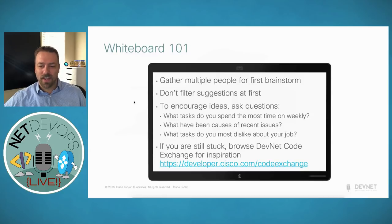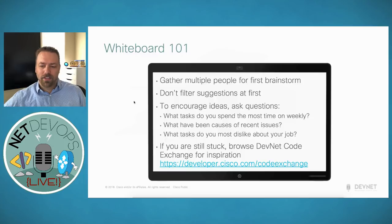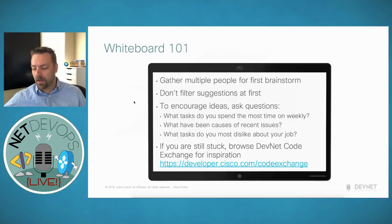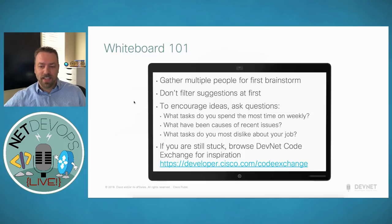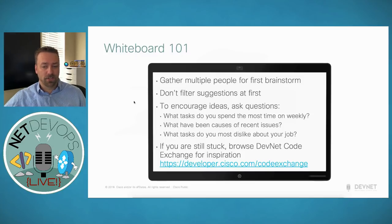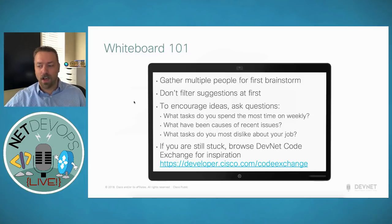If you're still struggling for ideas, check out DevNet Code Exchange at the URL provided. It's a curated list of a few hundred code repositories that people have submitted. You can filter or search by topics like 'data center' or 'Cisco DNA Center' to see what others are automating. All examples are open source with well-documented READMEs, and they're curated for relevance. It's a great way to get inspiration and find something that fits your environment.